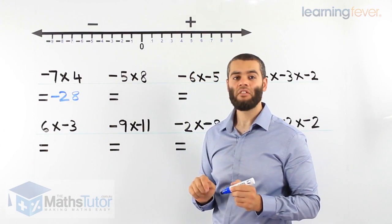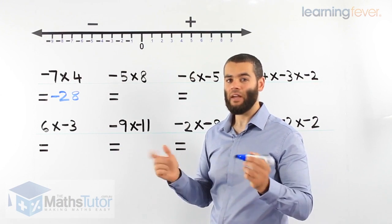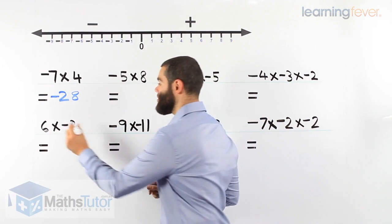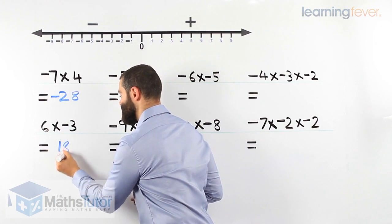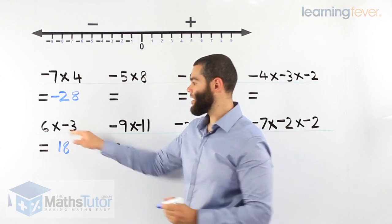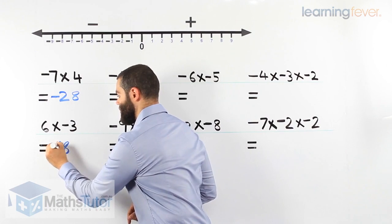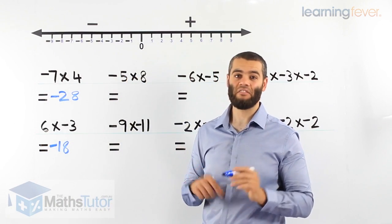Then we have 6 times negative 3. Again, same. 6 times 3 we know is 18. We put it in. We have one negative, we place it in. It's that simple.